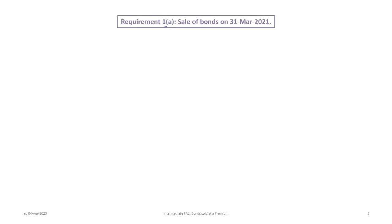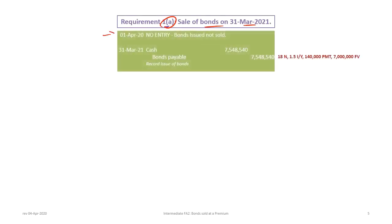Now we can move to the journal entries. For requirement A — the sale of bonds on March 31st — there is no entry on April 1st because the bonds are issued but not sold. On March 31st, we record a debit to cash and a credit to bond payable for $7,548,540, based on 18N, 1.5% per period, $140,000 payment, and $7,000,000 future value.